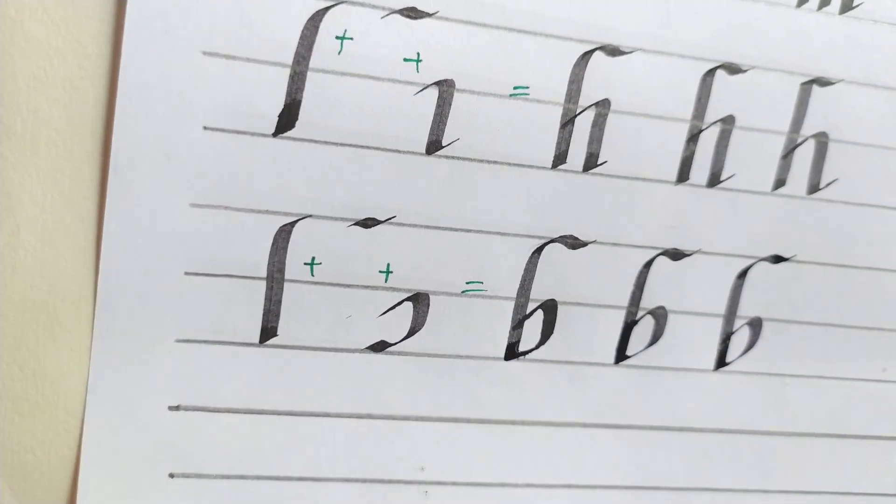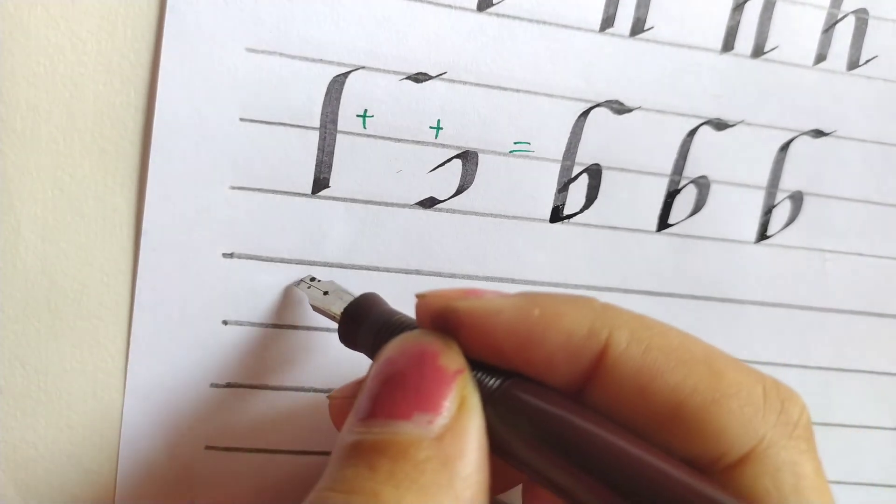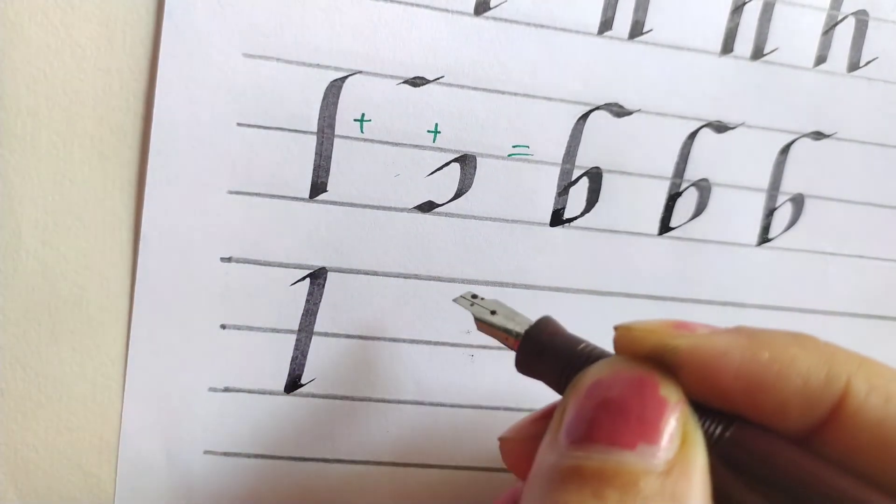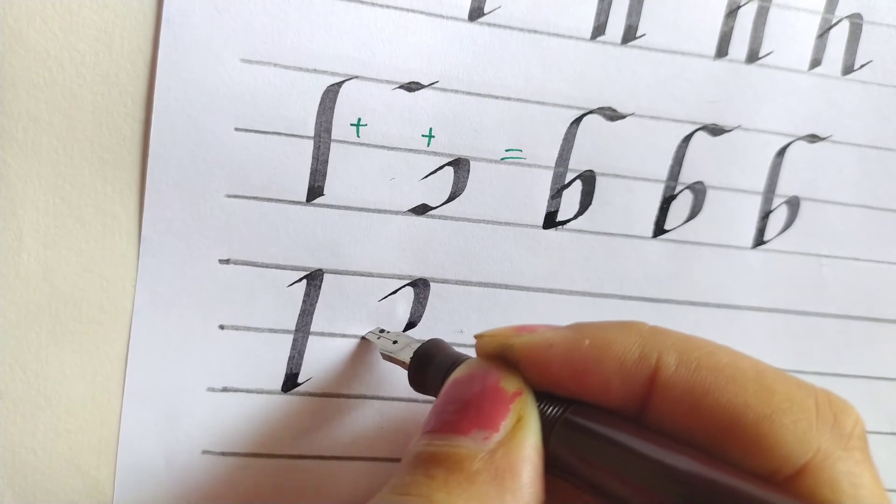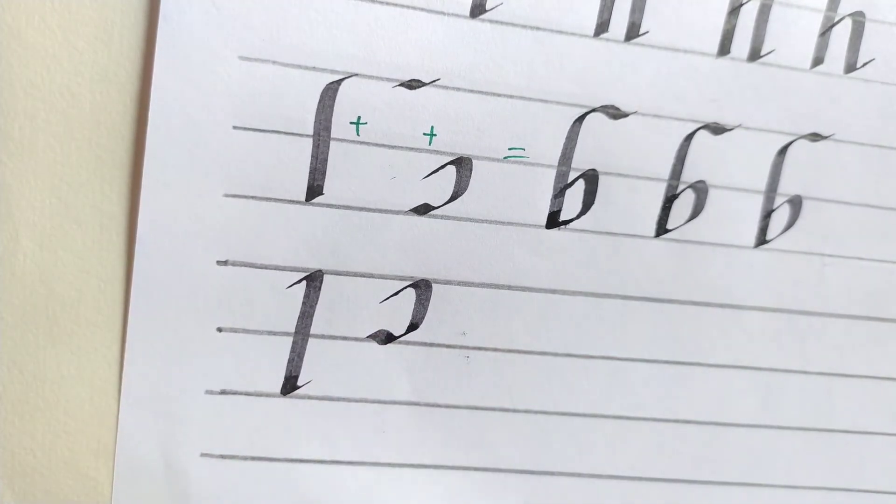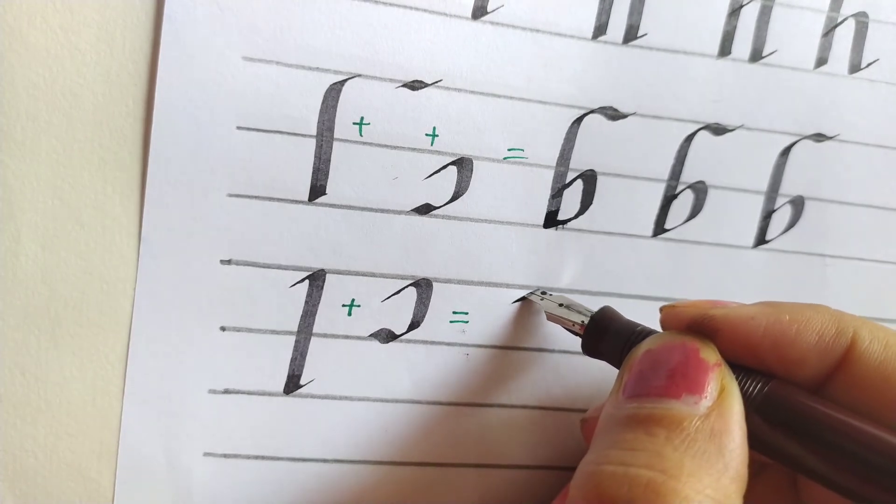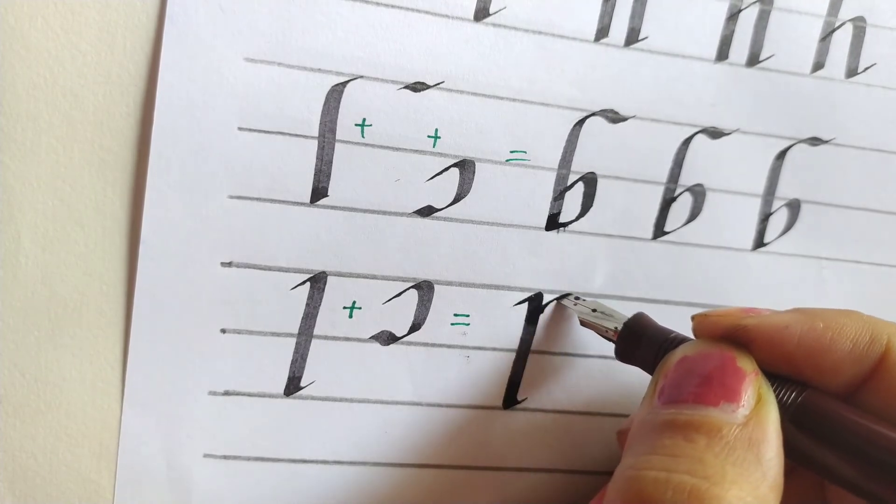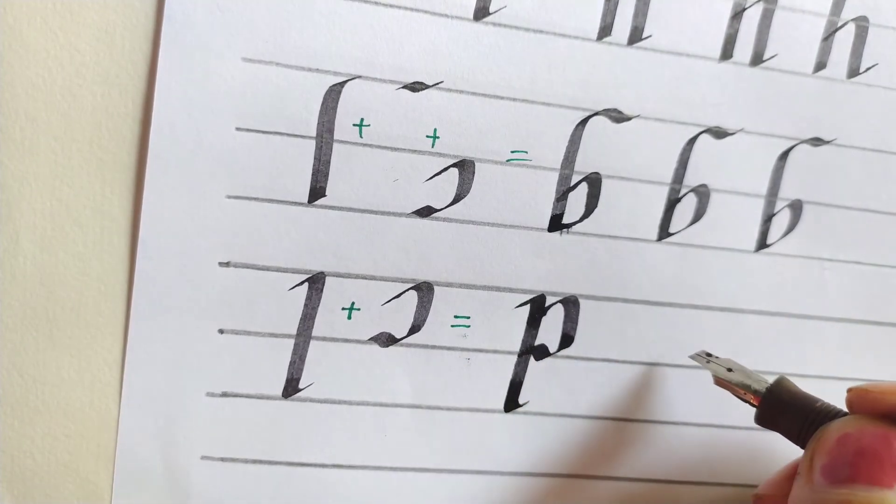Now we will write alphabet P. This is one and this second. Alphabet P.